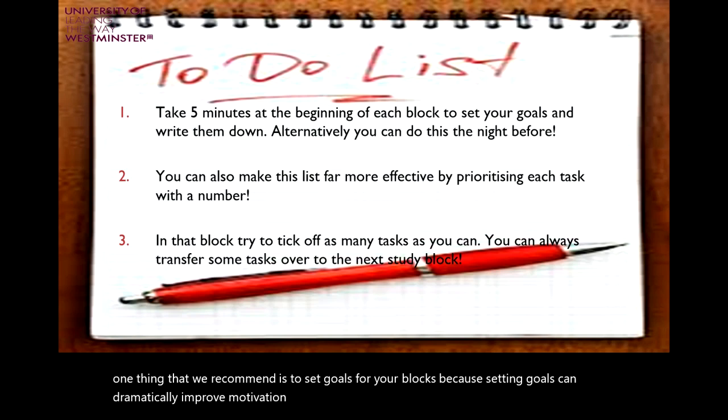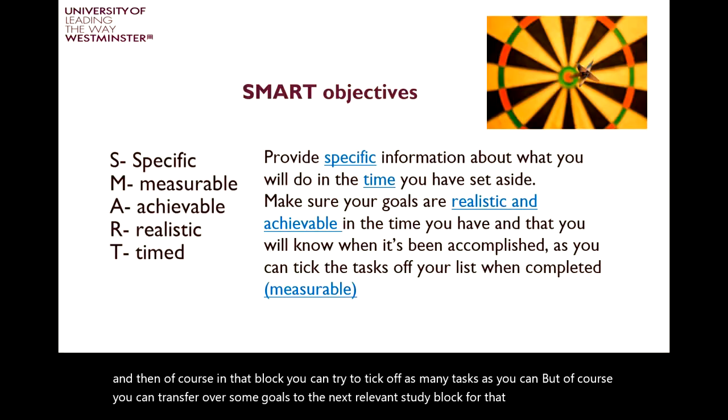If you want to make your list of goals even more effective, you can give each goal a number, with one being the most important goal you want to achieve in that study block. In that block, you can try to tick off as many tasks as you can, and transfer any remaining goals to the next relevant study block for that module. SMART objectives provide specific information about what you will do in the time you've set aside. Make sure your goals are realistic and achievable in the time you have, and that you will know when they've been accomplished as you can tick the tasks off your list — which means they are measurable.